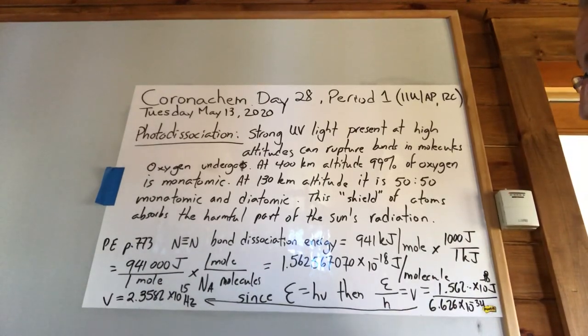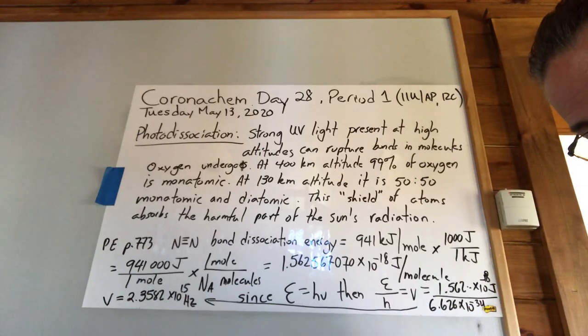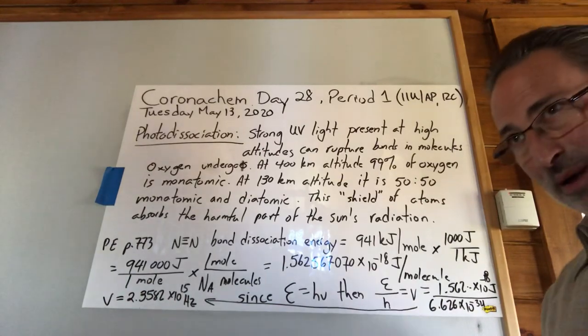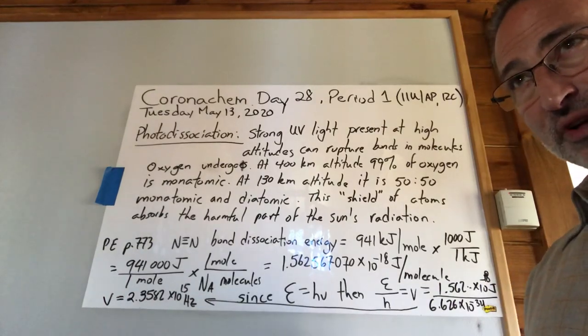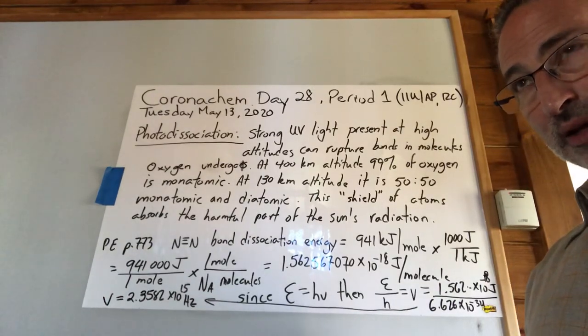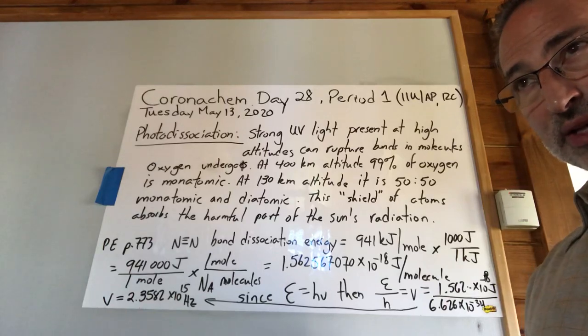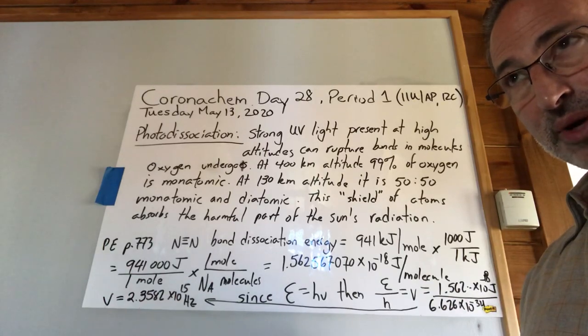So what is photodissociation? Photodissociation is a phenomenon that occurs in the upper atmosphere. At very high altitudes, the atmosphere is very thin and the sun's rays are at their full power because they haven't been filtered through anything.